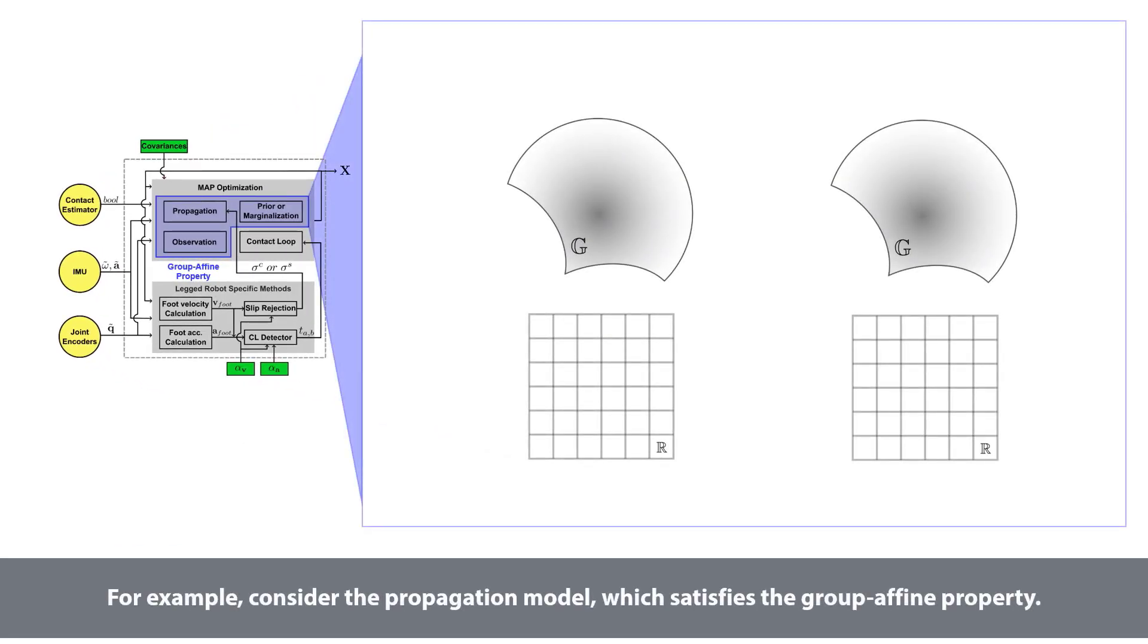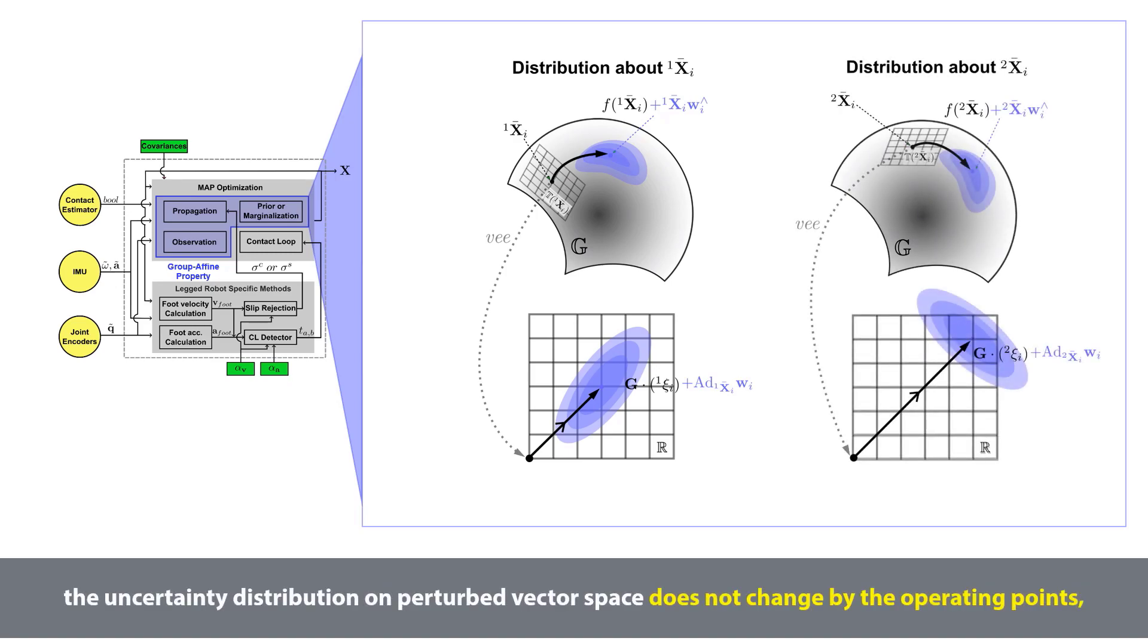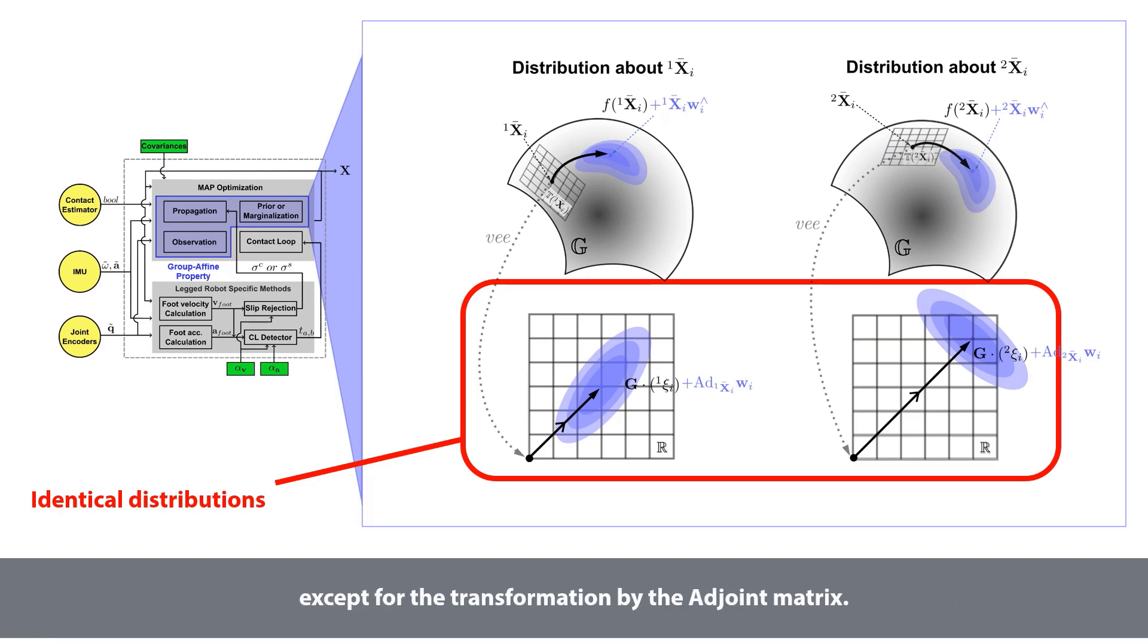For example, consider the propagation model, which satisfies the group affine property. For the same noise vector Wi, the uncertainty distribution on perturbed vector space does not change by the operating points, except for the transformation by the adjoint matrix.